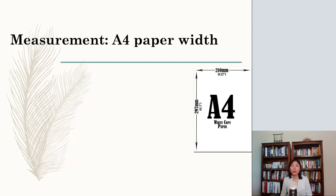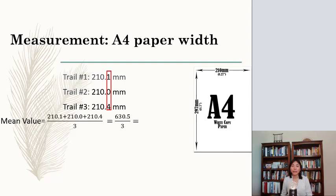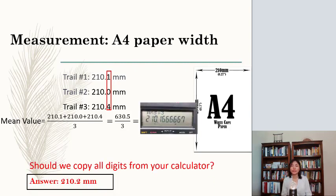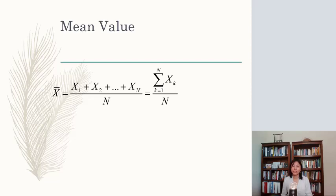Now let's look at A4 paper width measurement. We got three data and we know our unsure digit. When we add them together, the least accurate decimal place is the digit that's after the decimal place. Therefore, we have 630.5 divided by 3. Since 3 is not a measurement, there's no uncertainty in 3. Therefore, the answer should be 210.2. And here's a general equation for mean value.